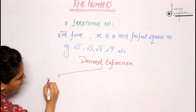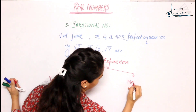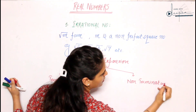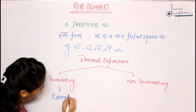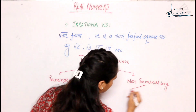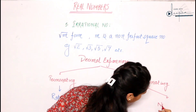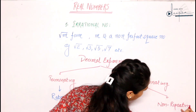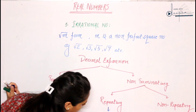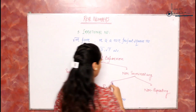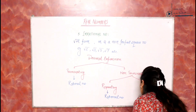A decimal can be terminating or non-terminating. If it is terminating, then definitely the number is a rational number. When it is non-terminating, it can again be repeating or recurring, and non-repeating. In the case of repeating — for example, 0.333... — this is again a rational number. But in the case of non-repeating and non-terminating — for example, the value of pi, which is 3.14... where the digits are all different — that means this is an irrational number.